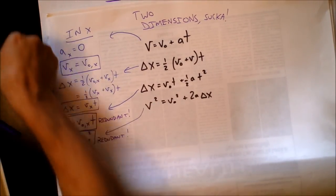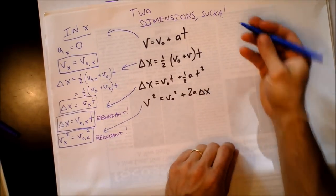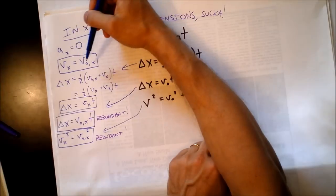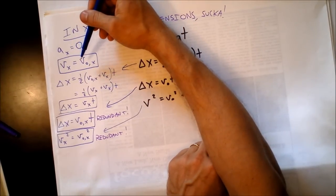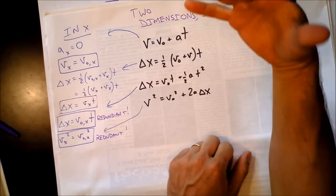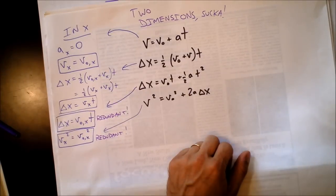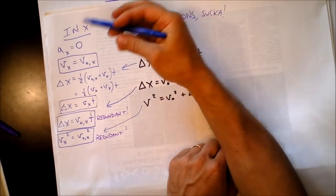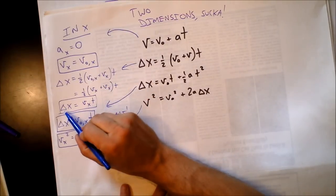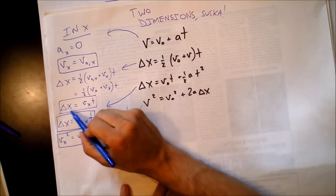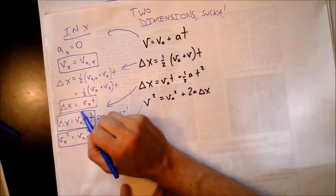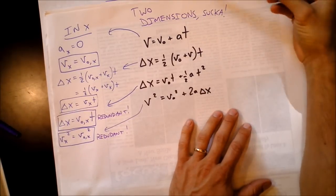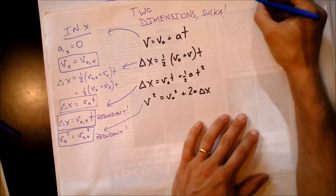To summarize the x direction: the initial velocity in x equals the final velocity in x because there's no acceleration — acceleration is what changes velocity. And displacement is simply velocity times time, which is the definition of average velocity: how far you've gone is how fast you're going times time. There are really only two kinematic equations needed in the x direction.